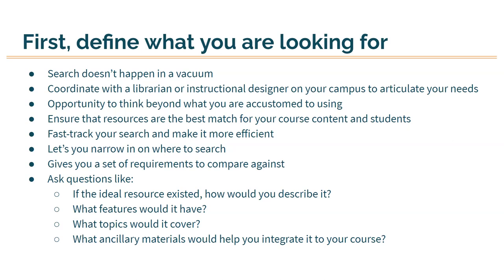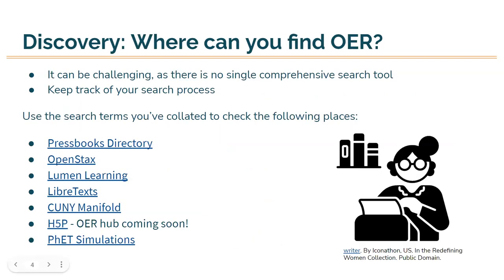You can use your student learning outcomes and previous syllabi to help identify key terms that you'll want to use for your search. It's an opportunity to consider: if the ideal resource existed, how would I describe it? What features would it have? What topics would it cover? What ancillary resources would help you integrate it into your course? Once you've identified the key topics and terms as well as the potential features you'd like to see, we can shift over into the search process.